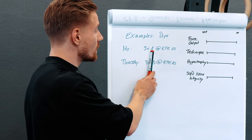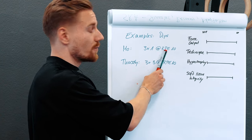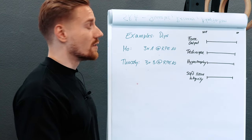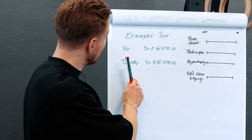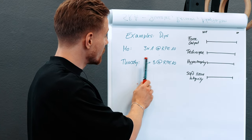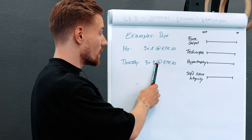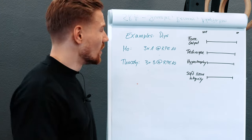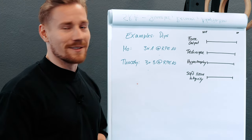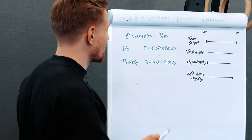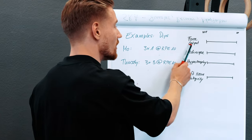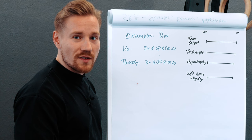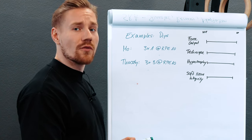We have a Monday session: three singles on dips at RPE 10 — max effort, heaviest you can go. And we have a Thursday session: three times three, also at RPE 10. So heaviest you can do. This is a pretty extreme example. If we look at force output, we are training very specifically to create force output.